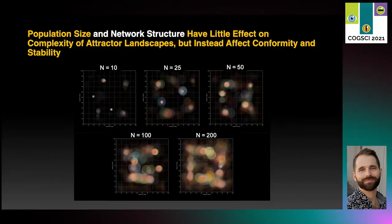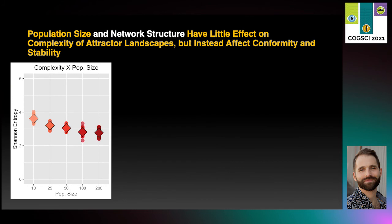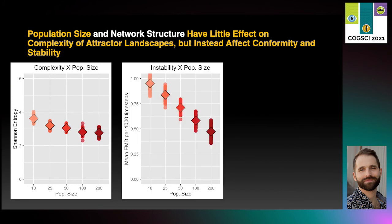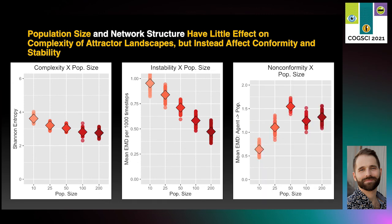We next looked at population size, which is tied up with population density in a fully connected network. Both of these things have been flagged as important factors for the potential for cumulative cultural evolution. We find that larger populations actually have slightly less complex category structures, but larger populations are also much more stable. However, we find a non-linear effect of population size on non-conformity, which is an interesting avenue for future work.